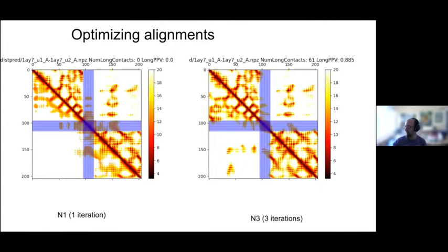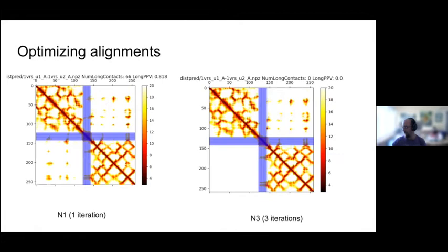It's not systematic that fewer or more iterations work better. For one protein, three iterations gives a nice prediction with 60 contacts at 89% accuracy, but one iteration gives basically no long-range contacts — just noise. For another protein, it's the other way around: one iteration gives 60 contacts at 80% accuracy, but three iterations loses the signal entirely. In both cases, the individual protein contact/distance maps are accurately predicted.